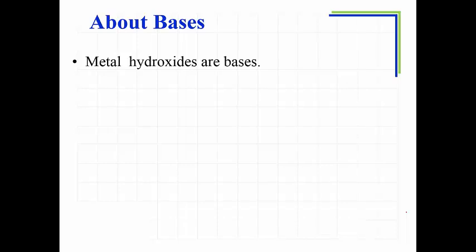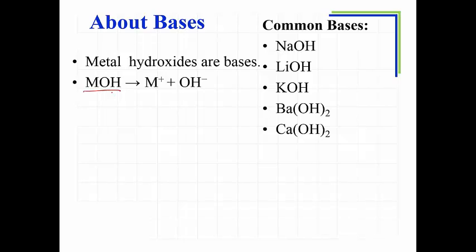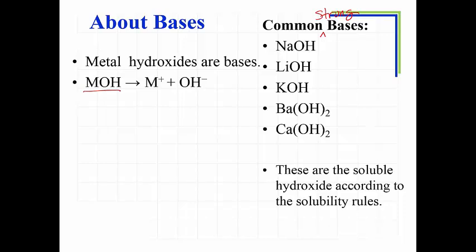The most common bases you'll encounter this semester are metal hydroxides. Metal hydroxides are bases because when dissolved in water they do what ionic compounds do — they break apart into ions. The common strong bases listed are the soluble hydroxides according to solubility rules. Not all metal hydroxides are listed because most aren't very soluble; these are the ones that meet the criteria of being soluble in water.